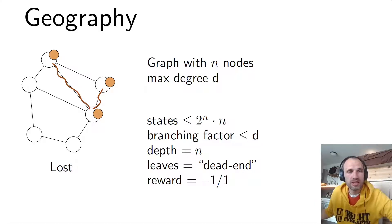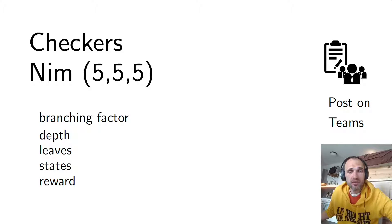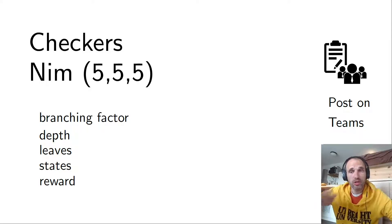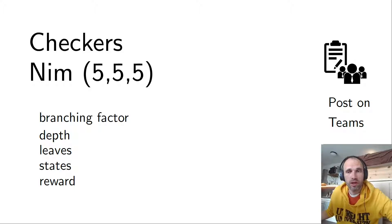Those are the basic facts about the game tree of Geography. The first assignment I want you to do in class is: check out the game of Checkers and the game of NIM. You can find the rules on Wikipedia. For NIM, look at the configuration 5-5-5 and determine the maximum branching factor, the depth, what the leaf looks like, the total number of states, and how you would set rewards. Post your answers on Teams — please don't post anything before the lecture for this assignment.